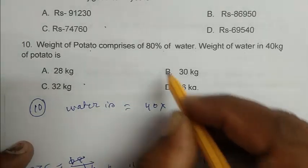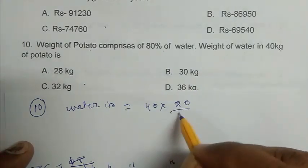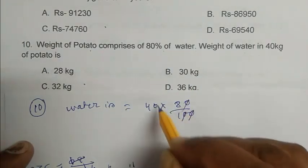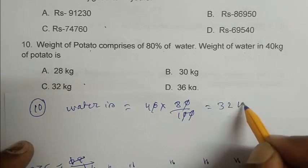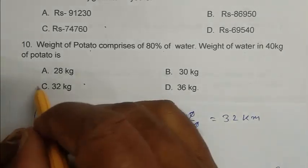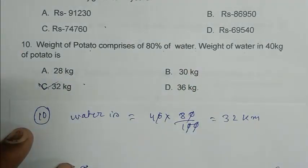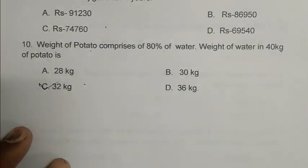One man can complete it in 40 into 24 days. And 30 men complete it in 40 into 24 by 30, 32 days. So D is the right answer. What of potato compresses of 80 percent of water. What of water in 40 kilograms of potato is. So 40 into 80 by 100, that is 32 kilograms. So C is the right answer. Thank you for watching. Have a good day.